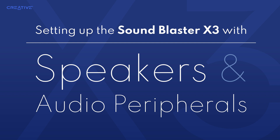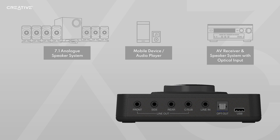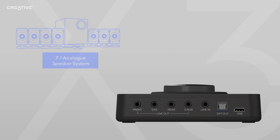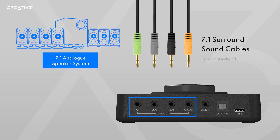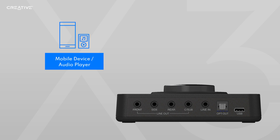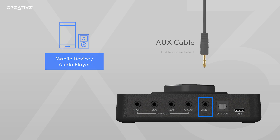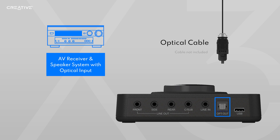Setting up the Sound Blaster X3 with speakers and other peripherals. The Sound Blaster X3 is designed to work with a wide array of audio devices. To use an analog speaker system with the Sound Blaster X3, connect via the four Line Out audio output ports for 5.1 or 7.1 surround sound. For mobile devices or audio players, simply connect via the Line In port using the appropriate audio cable. The Sound Blaster X3 even works with AV receivers, which can be connected via the optical out port and an optical cable.